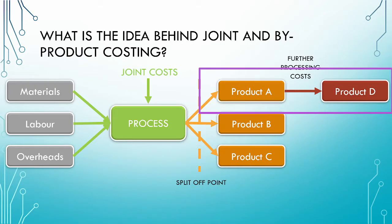What you should notice is that the joint costs fall entirely outside this decision area. It is key to remember that the joint costs are allocated to the individual products for the purpose of inventory valuation — they are not allocated for the purpose of decision making. It is also important to remember that each of the four allocation bases we have looked at is arbitrary; there is no cause and effect relationship.